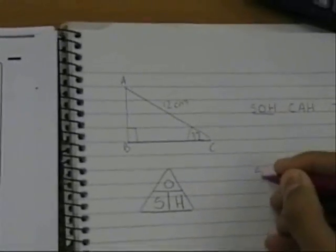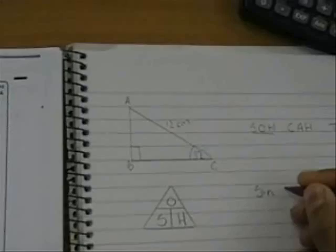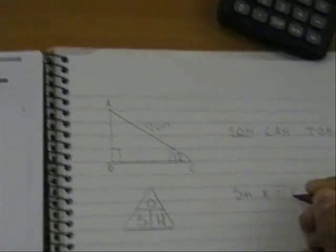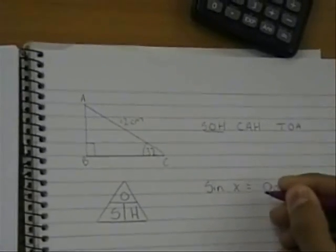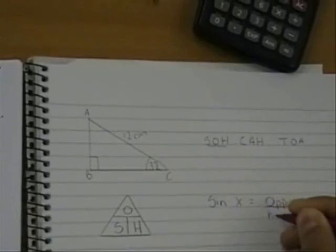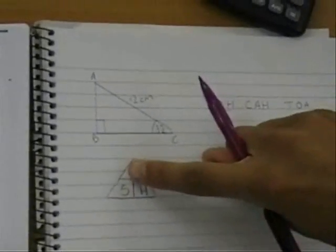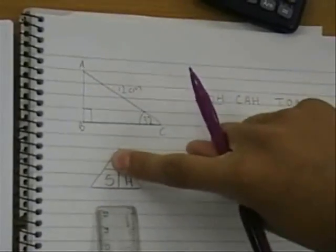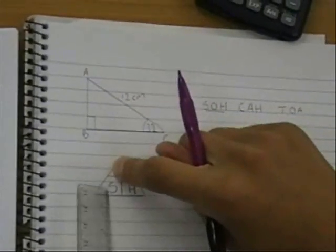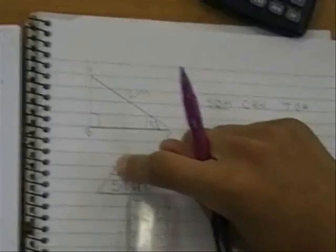This is sine x equals opposite over hypotenuse. So we can cover up opposite to see how we find opposite, which equals sine x times by hypotenuse.